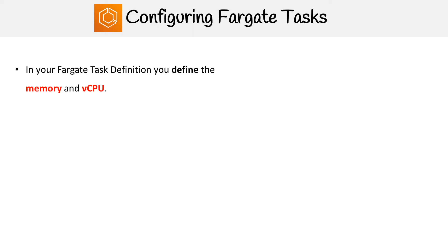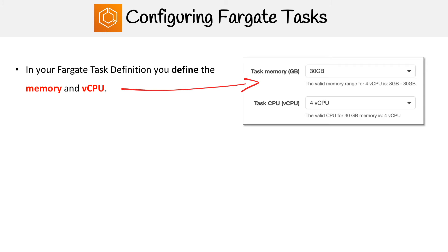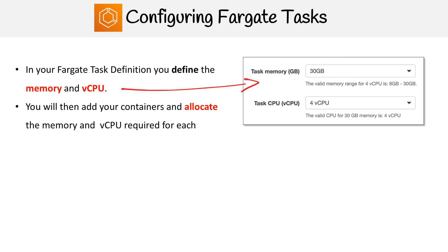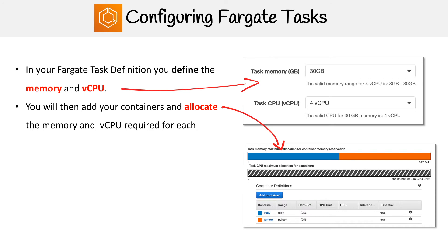Now we're going to look at how to configure a Fargate task. The first thing you're going to do is use the task definition wizard in the Fargate console. You're going to have to choose how much memory and CPU you want to utilize entirely for all your tasks. Then you're going to add containers and allocate memory and CPU for each based on the requirements of the allocation you've defined above. Here I have a Ruby and a Python container, and you can see that I've split the memory half and half for both.